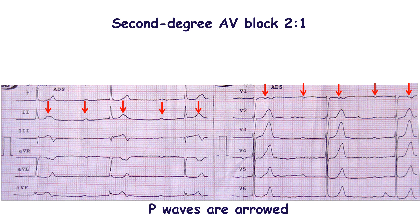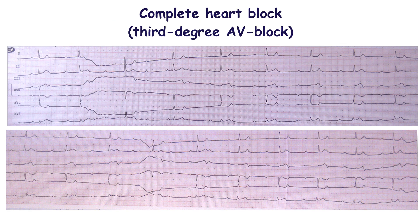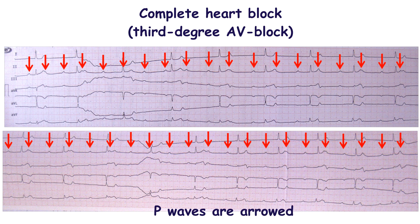The patient was prepared for temporary pacemaker placement. An ECG done one hour later showed complete heart block. It may initially appear to be second degree AV block with 2-to-1 conduction, but in this case the PR interval is always different.